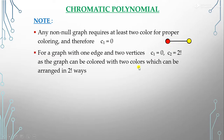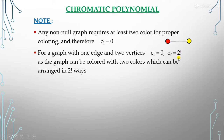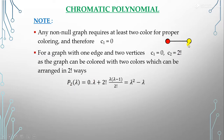Consider a simple graph with just one edge and two vertices. Here c_1 = 0 and c_2 = 2! because we have only two colors for two vertices, which can be arranged in 2! ways. So the chromatic polynomial P_2(λ) = c_1 × λC_1 + c_2 × λC_2 = 0 + 2! × λ(λ−1)/2! = λ² − λ. Thus the chromatic polynomial of this graph is λ² − λ.